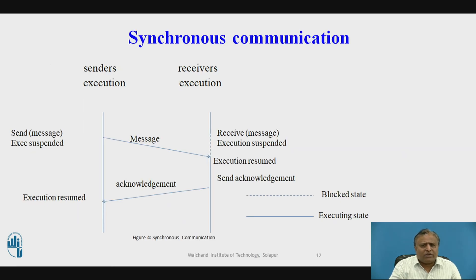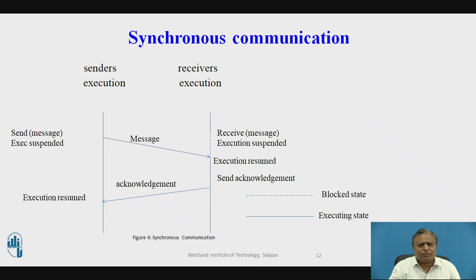This is the diagram of synchronous communication. The sender is shown on one side and the receiver on the other. The sender sends a message and stops its execution. At the receiver side, execution is suspended and then resumed upon accepting the message. An acknowledgement is then sent from the receiver to the sender, and execution resumes at the sender side. The dashed line shows the blocked state and the solid line shows the executing state.